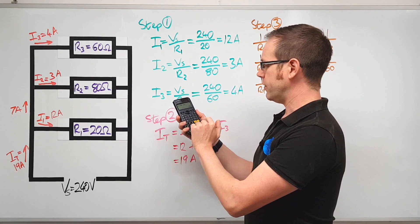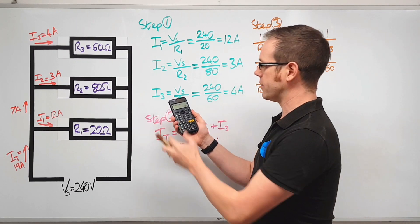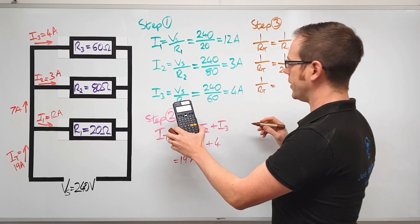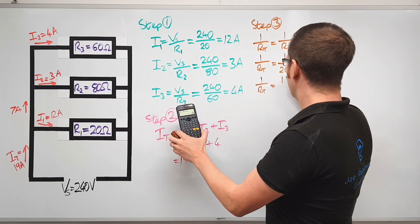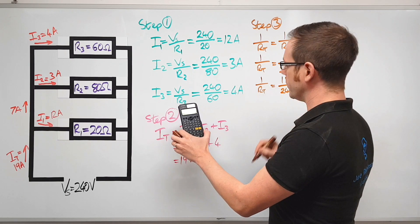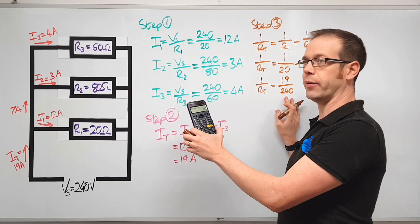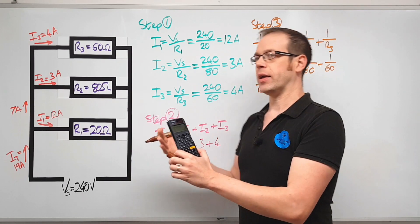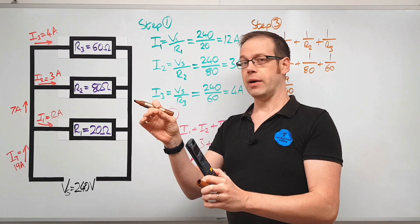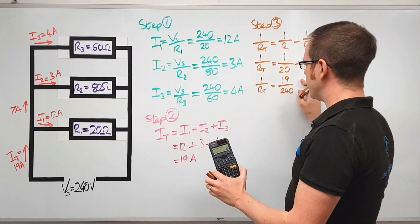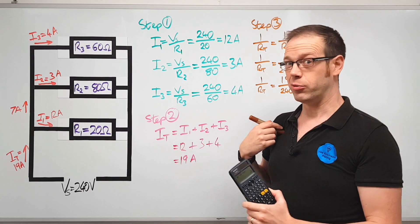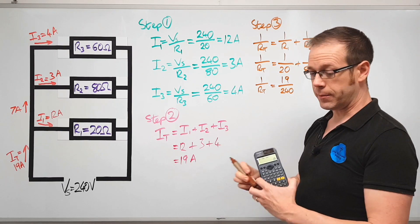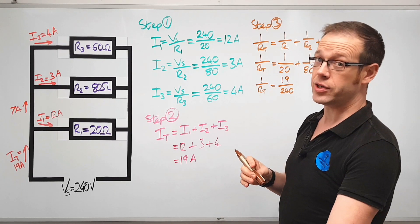Now it gives us rather a nasty decimal. If we press the SD button we'll keep it as a fraction. So one over RT is equal to 19 over 240. Now if we were to put the decimal value in there, which we certainly could do, the next stage of the calculation we'd probably lose a little bit of accuracy. So I'm going to leave this as a fraction and show you a really nice little trick on how we can now figure out what the total resistance is, and that is very simply just to turn both sides of the equation upside down.